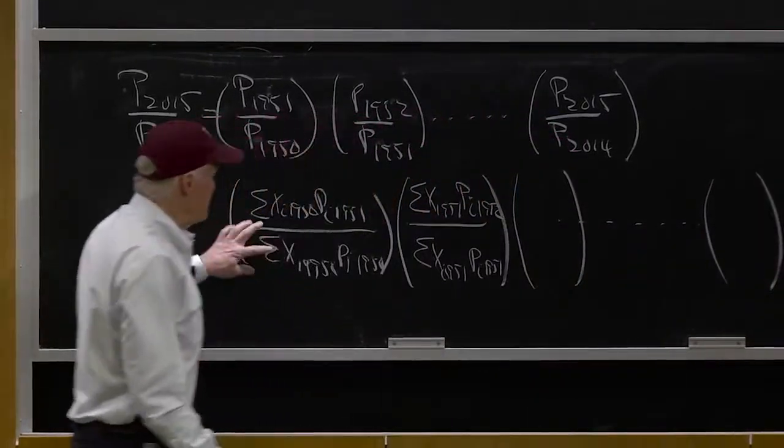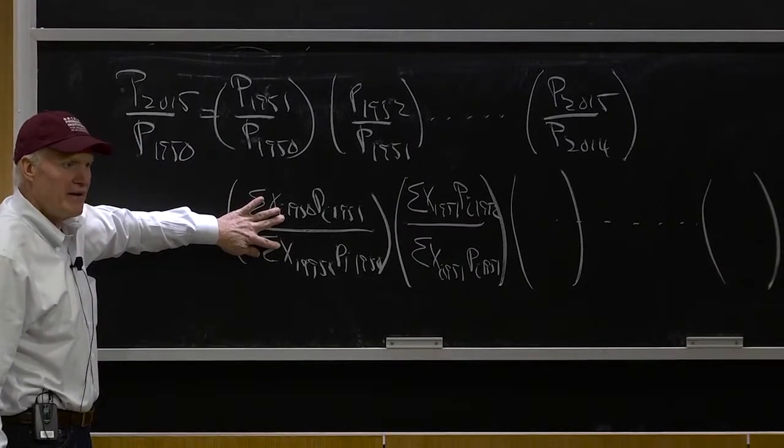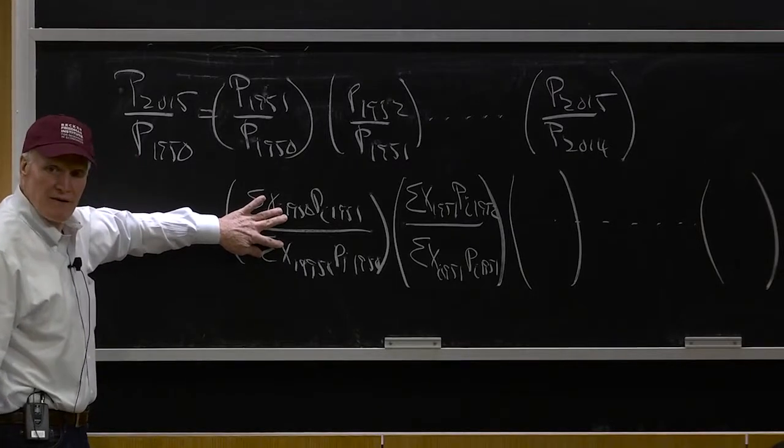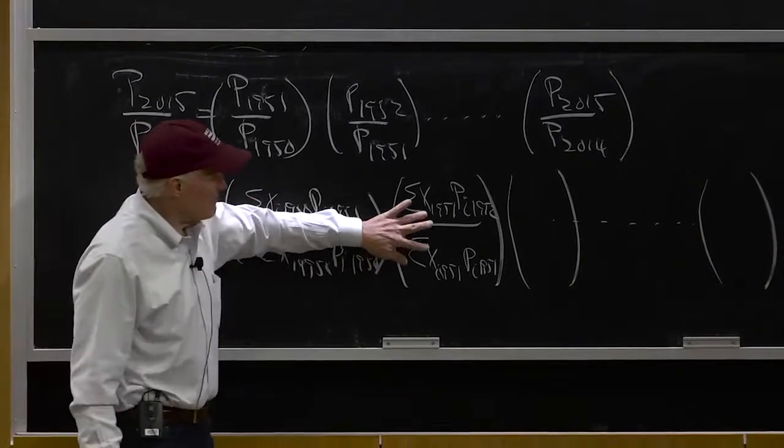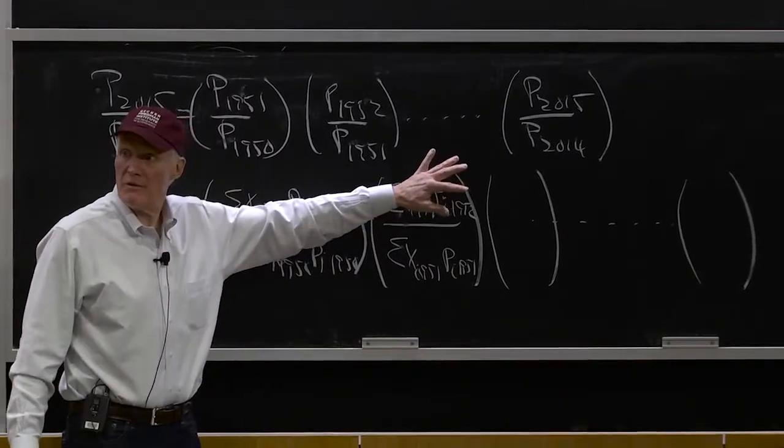And because I'm using the same bundle in the numerator and the denominator, that's a price index, and I'm adding, if there are new goods coming in, I'm adding them in as they go.